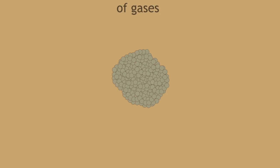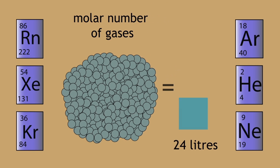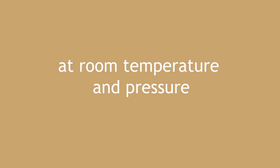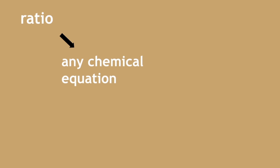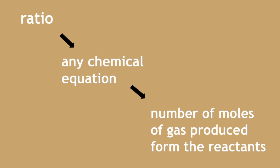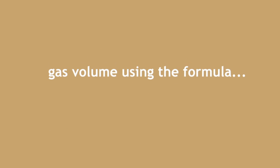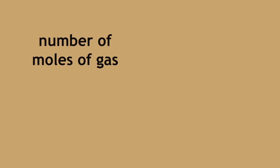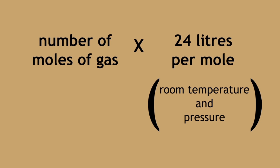In summary, the molar volume of any gas is always 24 litres per mole at room temperature and pressure. Using the example provided, you can use the ratio from any chemical equation to tell you the number of moles of gas produced from the reactants. This means you can always calculate the gas volume using the formula: number of moles of gas times 24 litres per mole at room temperature and pressure.